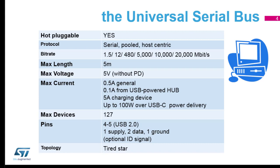About the bitrate, it goes from 1.5 megabits up to 20 gigabits. With STM32, we are limited to 480 megabits — what we call high speed. So we'll see three different speeds: low speed, full speed, and high speed. The names are a little confusing. Low speed is 1.5 megabits, full speed is 12 megabits, and high speed is 480 megabits.